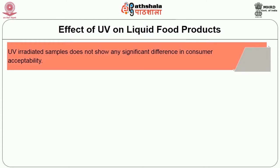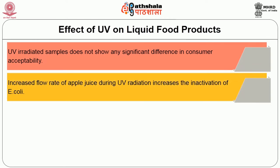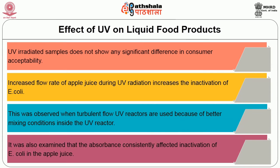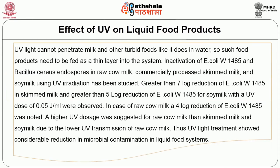UV irradiated samples do not show any significant decrease in consumer acceptability. Increased flow rate of apple juice during UV radiation increases the inactivation of E. coli, observed when turbulent flow UV reactors are used because of better mixing conditions inside the UV reactor. It was also examined that absorbance consistently affected the inactivation of E. coli in apple juice.